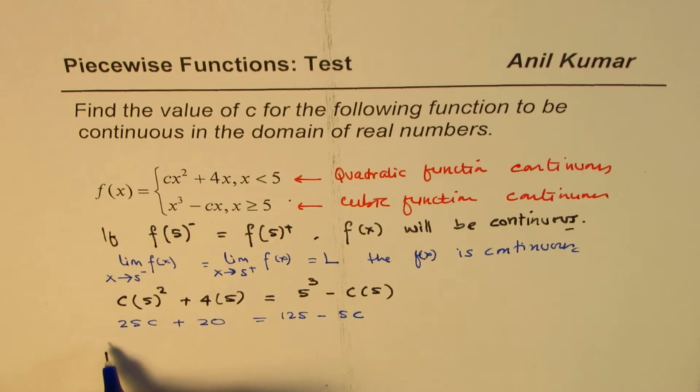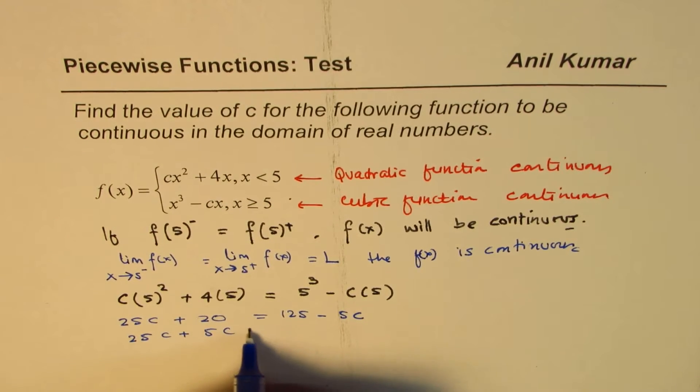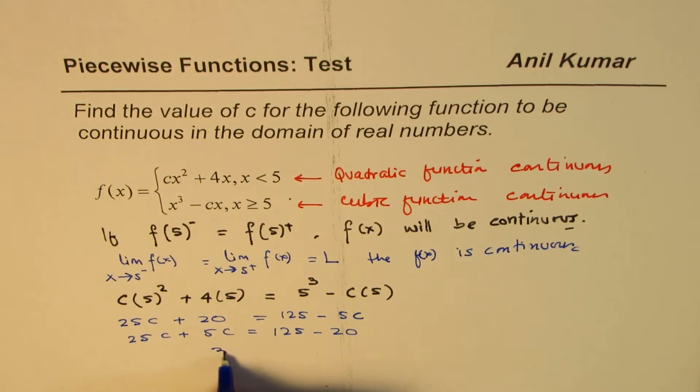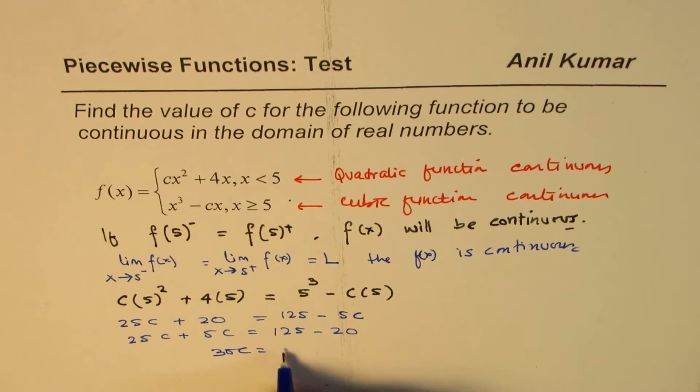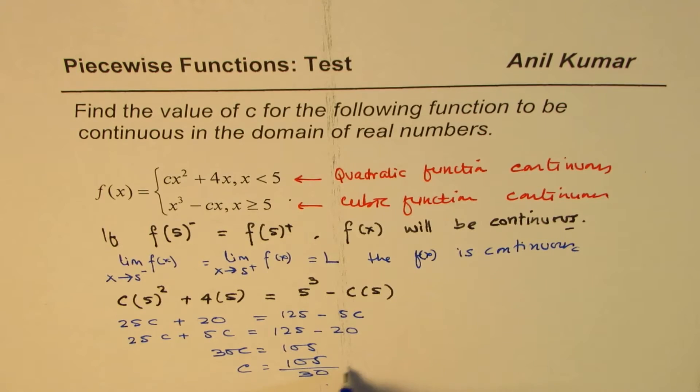So we have 25c plus 20 equals 5 cubed, which is 125, minus 5c. Bring them together. When I bring this to this side, we get 25c plus 5c equals 125 minus 20, or 30c equals 105, or c equals 105 divided by 30.